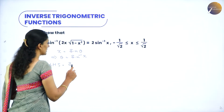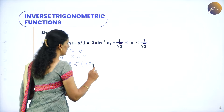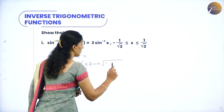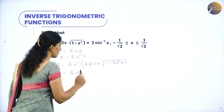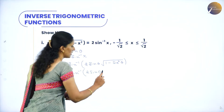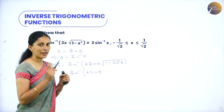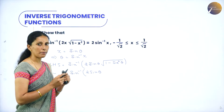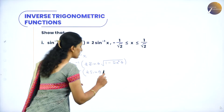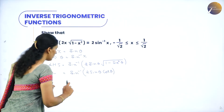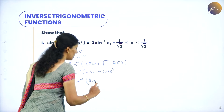LHS is sin inverse of 2 sin theta times √(1 - sin²theta). Now 1 minus sin square theta can be written as cos square theta because sin square theta plus cos square theta is 1. So cos square theta under the square root cancels with the square and we are left with cos theta. So we have sin inverse of 2 sin theta cos theta.